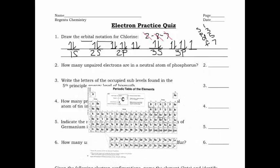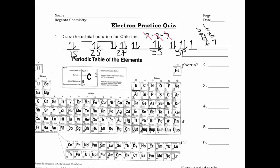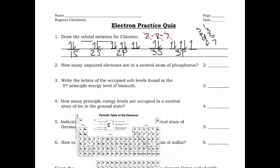Knowing that phosphorus is here, I can use a dot diagram. I can ignore all the non-valence electrons and just look at the valence number, which is five. Drawing the dot diagram: one, two, three, four, five. I have one, two, three unpaired electrons.